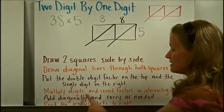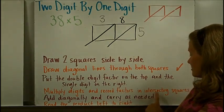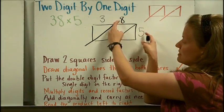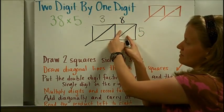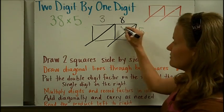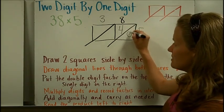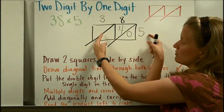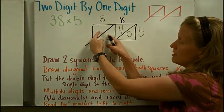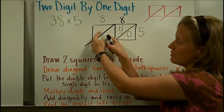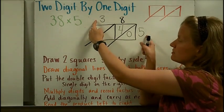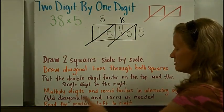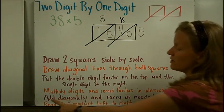Now I multiply the digits and record the products in their intersecting squares. The 8 and the 5 intersect in this box: 8 times 5 is 40, so 4 in the tens place and 0 in the ones place. Then I look at where the 3 and the 5 intersect in the other box and write that product: 3 times 5 is 15, so 1 in the tens place and 5 in the ones place.